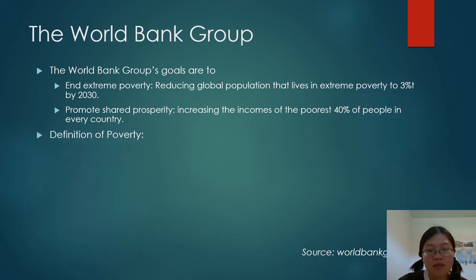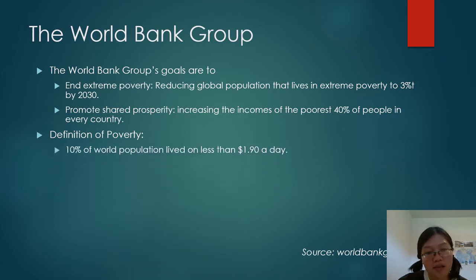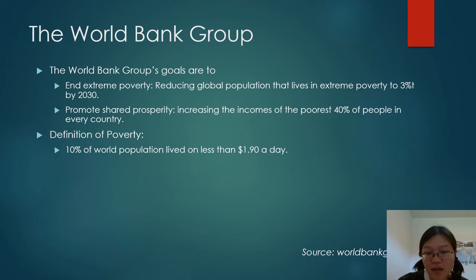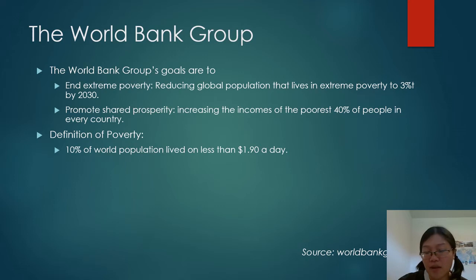How does the World Bank Group define poverty? The World Bank's definition is actually used worldwide by most international development actors. It states that 10% of the world's population lives on less than $1.90 a day — this is the current poverty line they've drawn using specific methods to calculate it. You can refer to their website for the details.